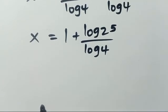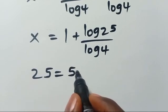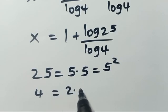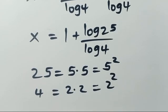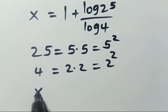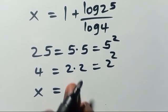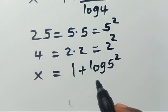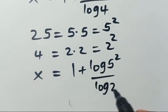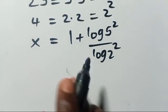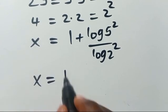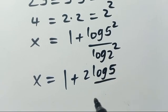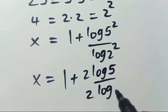Then we can write 25 as 5 times 5, which equals 5 to the power of 2, and we can write 4 as 2 times 2, which equals 2 to the power of 2. Substituting, we have x equals 1 plus log of 5 squared divided by log of 2 squared. Using the power rule, the powers come down, giving 2 multiplied by log 5 divided by 2 multiplied by log 2.